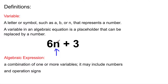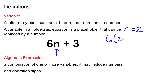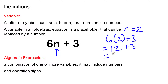An algebraic expression is a combination of one or more variables. It may include numbers and operation signs. For example, if N equals 2, your equation is going to be 6 times 2 plus 3, which gives you 12 plus 3, and your answer is 15. Easy like that.